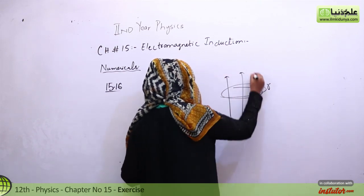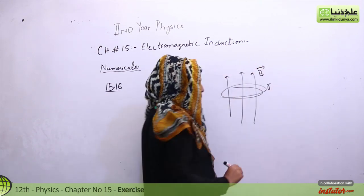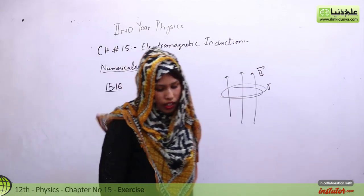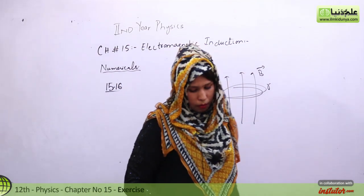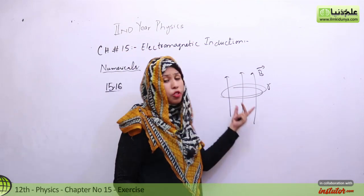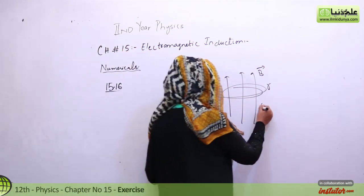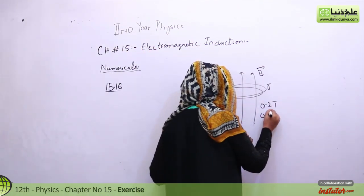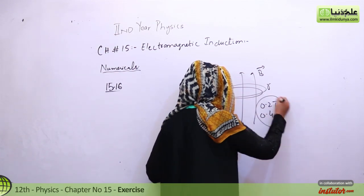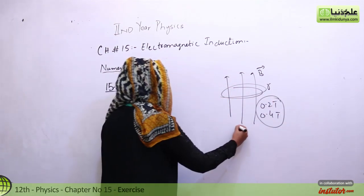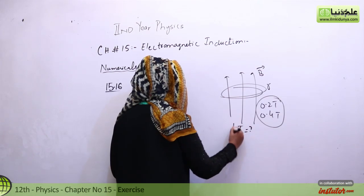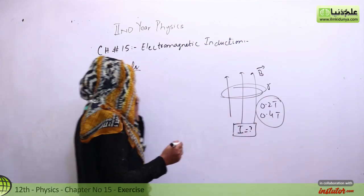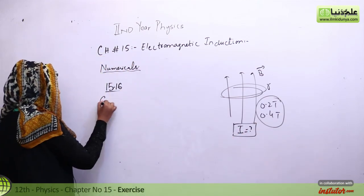What we are told is suppose this is a ring with radius given. Perpendicular to it, we have a magnetic field. The magnetic field changes from initially 0.2 tesla to 0.4 tesla, and we have to find the current in this ring.